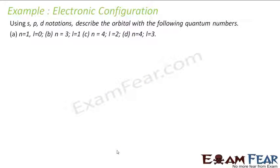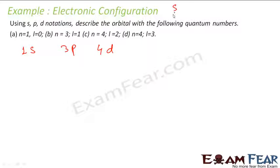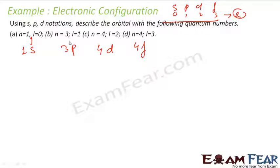Using the spdf notation, describe the orbitals with the following quantum numbers: n=1, l=0 → this is 1s. n=3, l=1 → l=1 means p, so this is 3p. n=4, l=2 → l=2 means d, so this is 4d. n=4, l=3 → l=3 corresponds to f, so this is 4f.